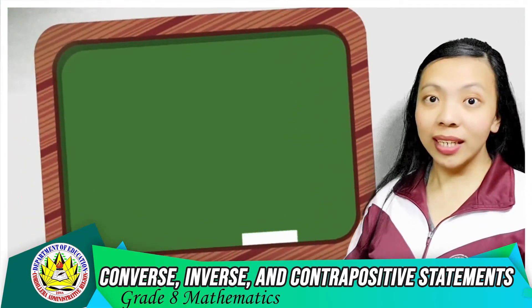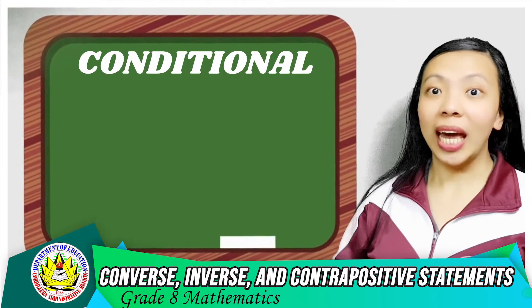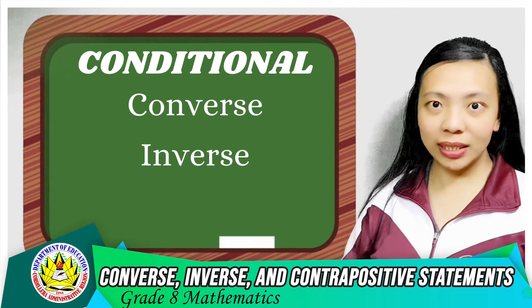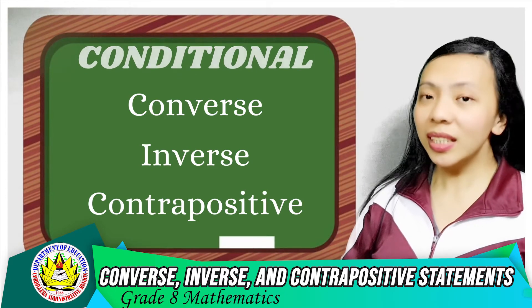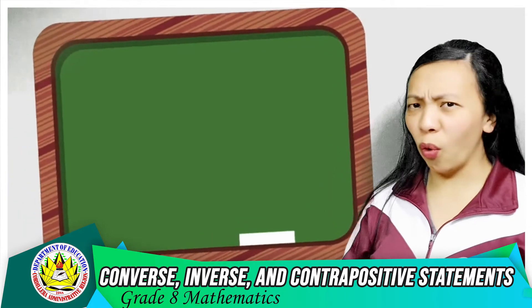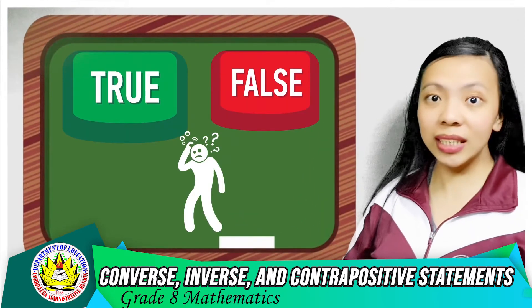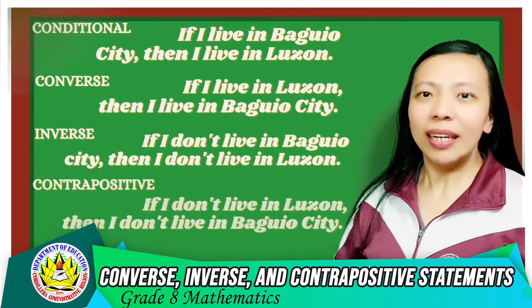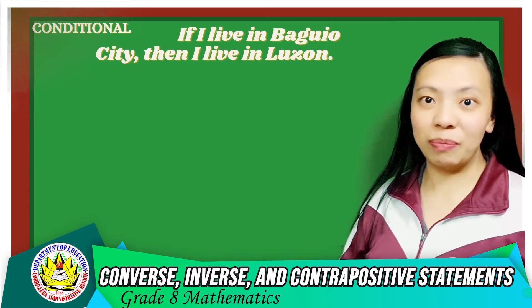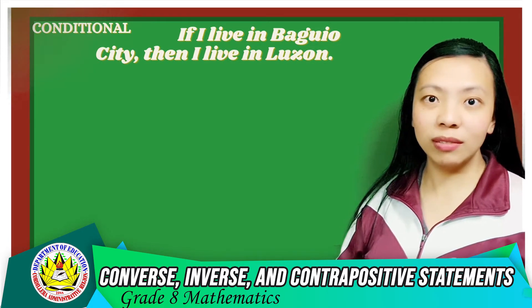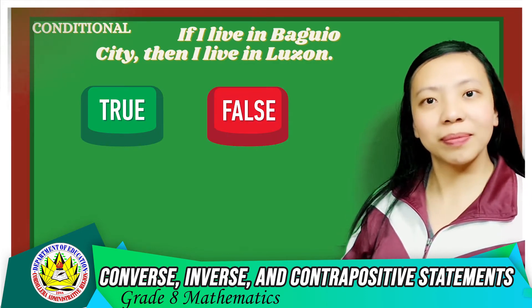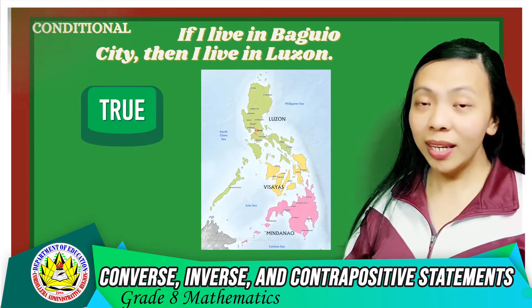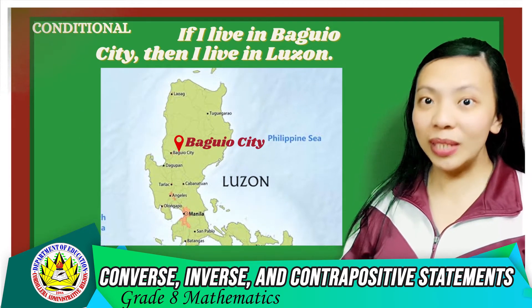In summary, a conditional has three related statements: its converse, inverse, and contrapositive. Now let us decide whether these statements are true or false. The conditional — 'If I live in Baguio City, then I live in Luzon' — is true, because Baguio City is located in Luzon.